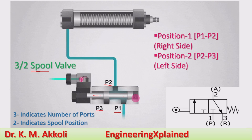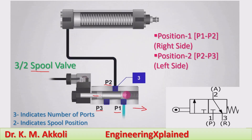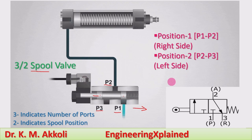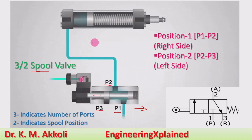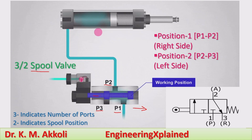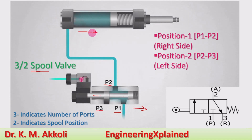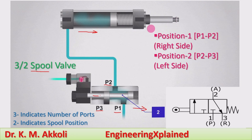First we will take the right position. In the right position, P1 connects to P2 — this is also called the working position. When P1 is connecting to P2, the flow from the pump to the hydraulic cylinder is taking place. When the fluid flows from the pump to the hydraulic cylinder, the piston extends due to the fluid pressure, and the work output takes place.